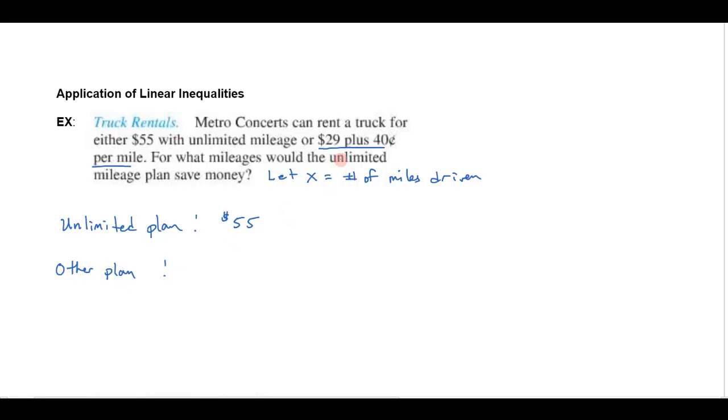The other plan is $29, so that would be just the cost to sit in the truck. But then in addition to that they will charge you 40 cents for every mile. So I'll get 40 cents times x. X is the number of miles, so if we went 100 miles that would be another $40 in addition to the $29. So it's either going to cost $55 or $29 plus 0.40x.